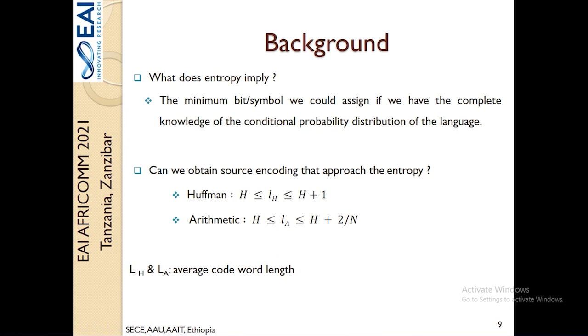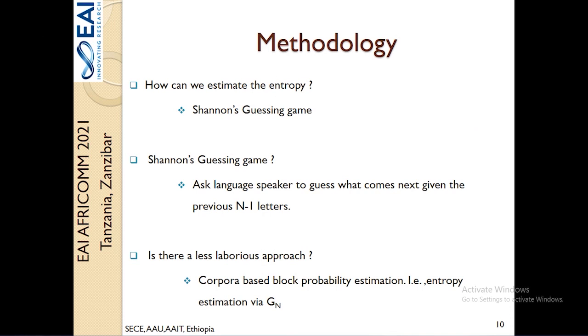Shannon's student also identified that there could be entropy-based encoding techniques such as Huffman, and these techniques could at least approach the entropy within a very small range. For instance, the Huffman encoding can range from H to H plus one of the entropy, whereas the arithmetic can range from H to H plus 2 over n, where n is the number of total symbols you have within the language.